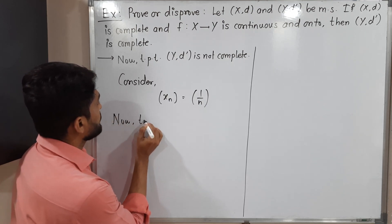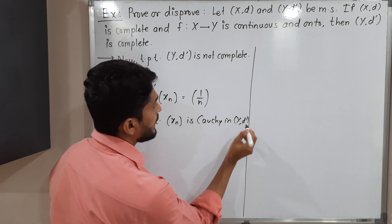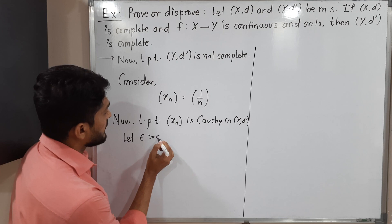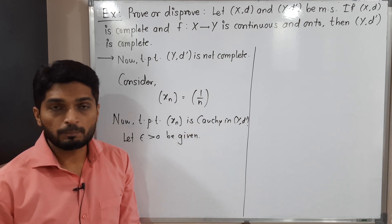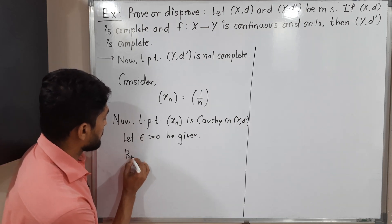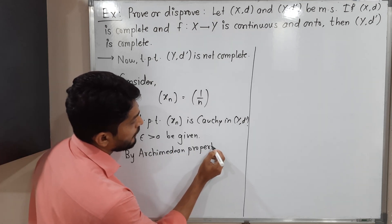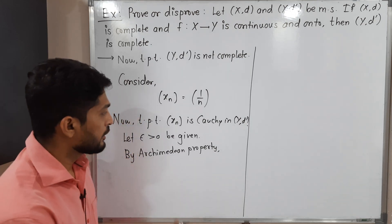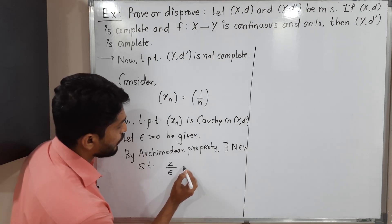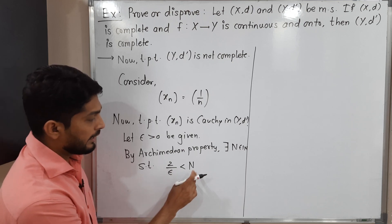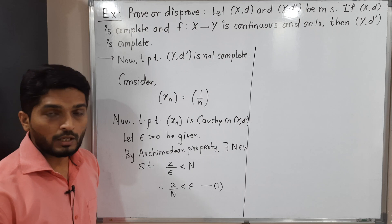To prove x_n is Cauchy in (Y, d'), let ε > 0 be given. By the Archimedean property, there exists a natural number N such that N > 2/ε, which means 2/N < ε. We will call this inequality (1).